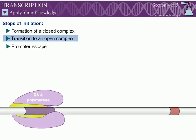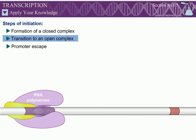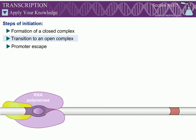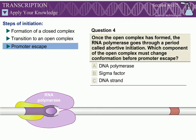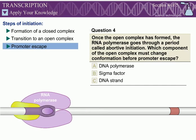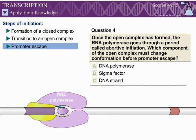Question 3: Which component or components of the closed complex must change conformation during transition to an open complex? Question 4: Once the open complex has formed, the RNA polymerase goes through a period called abortive initiation. Which component of the open complex must change conformation before promoter escape?